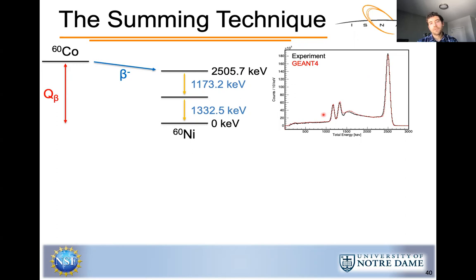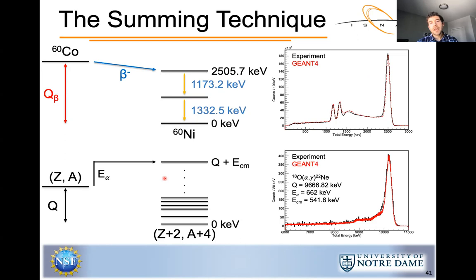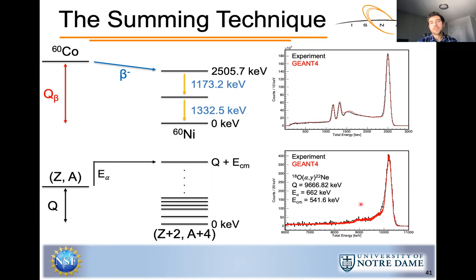As a total absorption spectrometer, HECTOR uses the summing technique. For example, cobalt-60 beta decays to an excited state in nickel-60, which de-excites by emitting two sequential gamma rays. In the sum spectrum these are summed together, producing a sum peak at the energy of the excited state. For a radiative capture reaction, the compound nucleus formed at the Q value plus center-of-mass energy de-excites, and the number of counts in the sum peak is proportional to the number of reactions. Geant4 is used to estimate the summing efficiency.